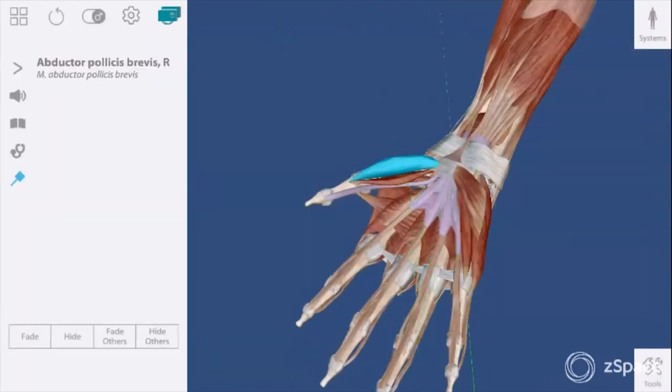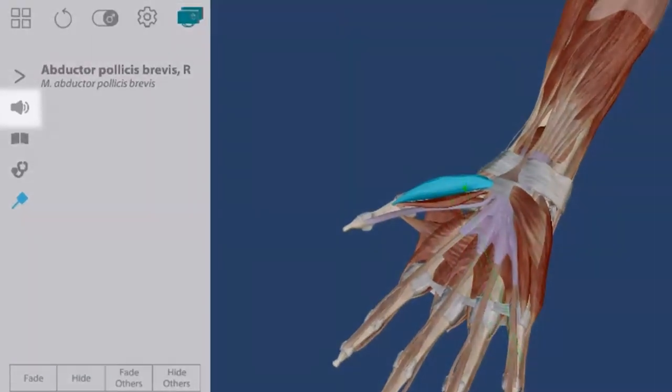Using my stylus, I have selected a particular area called the abductor pollicis brevis. Any other area that I click will also show up if selected.